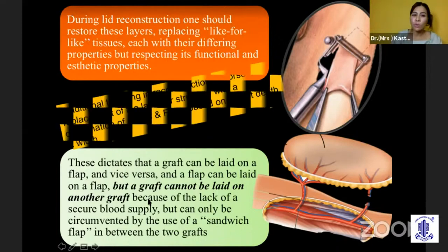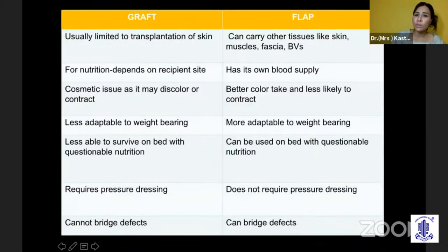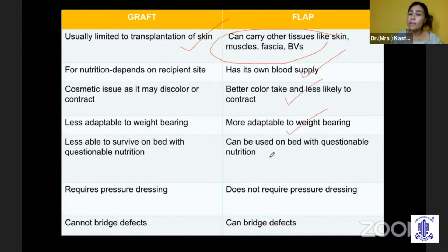The traditional teaching, as previous speakers have shown, is how we replace the lamellar structure by the combination of grafts and flaps. The grafts are basically limited to only the skin, but a flap consists of skin, muscle, and fascia. It has its own blood supply, gives better color, is more adaptable to weight-bearing areas, can be used on beds with questionable nutrition, and most importantly can bridge the defect.